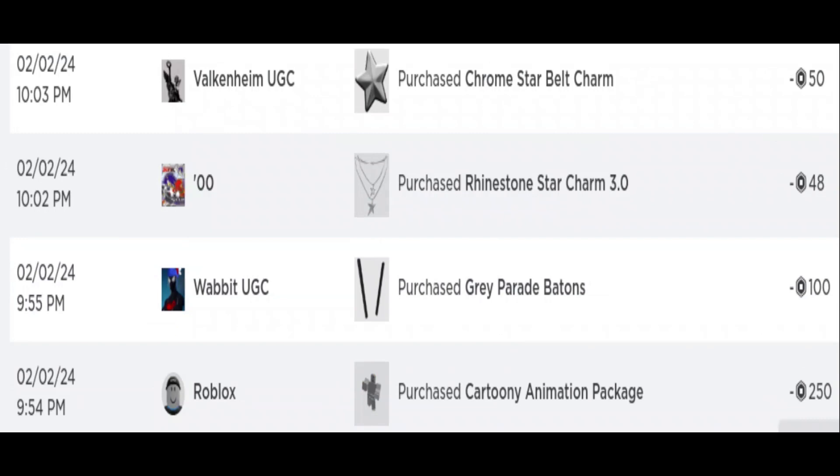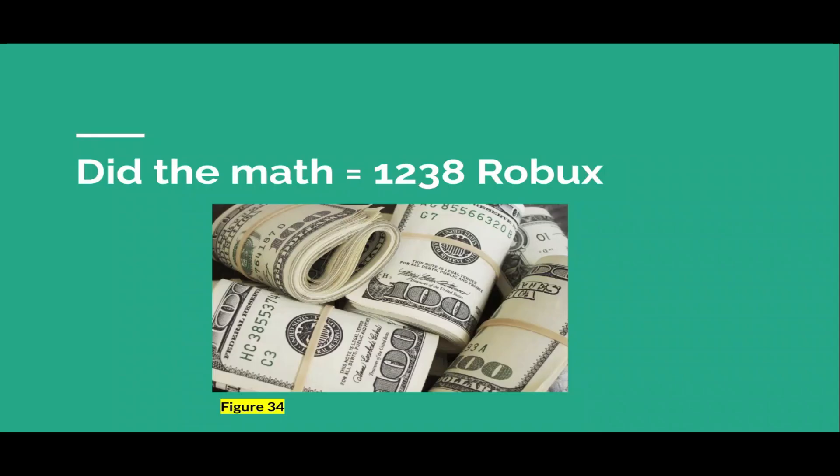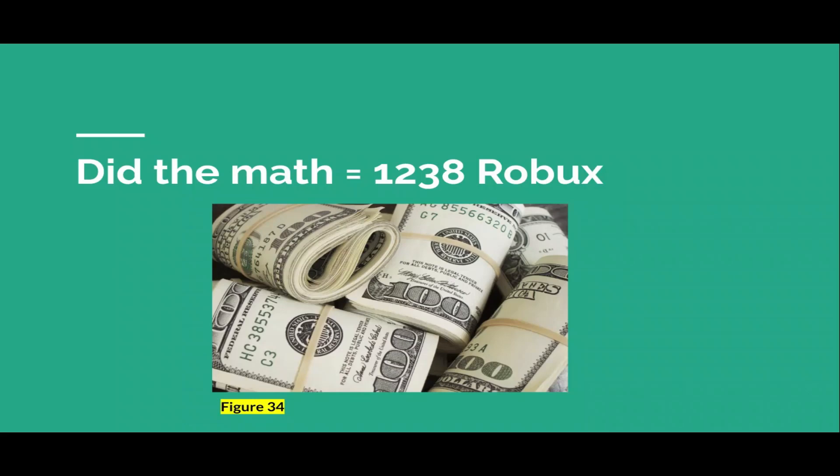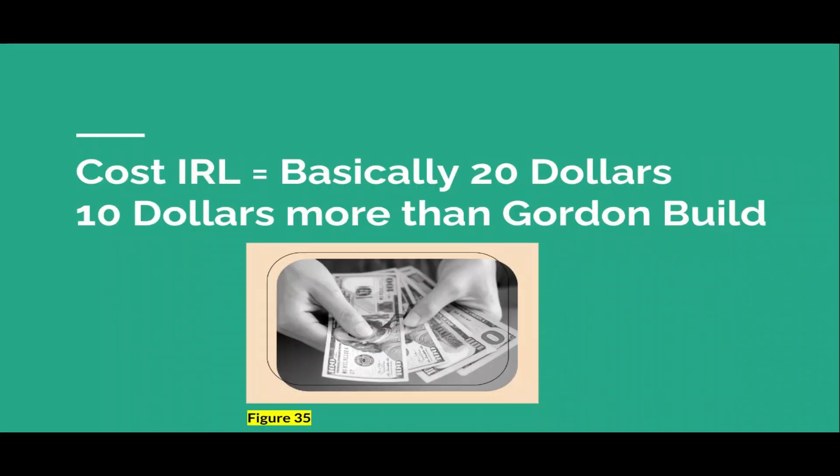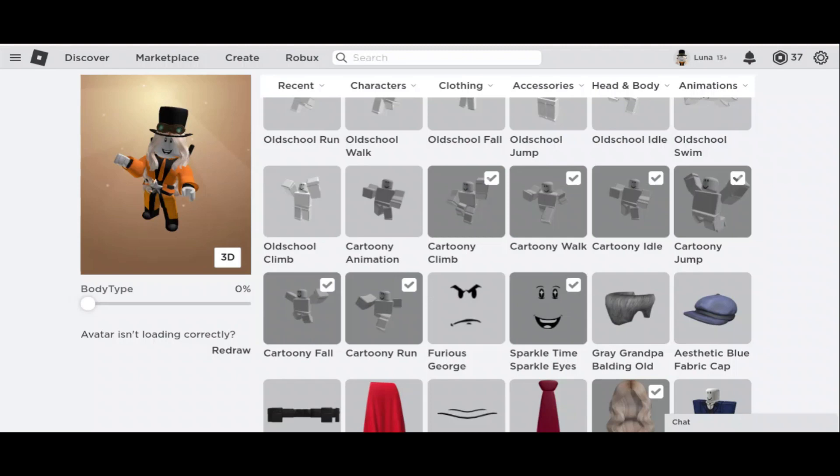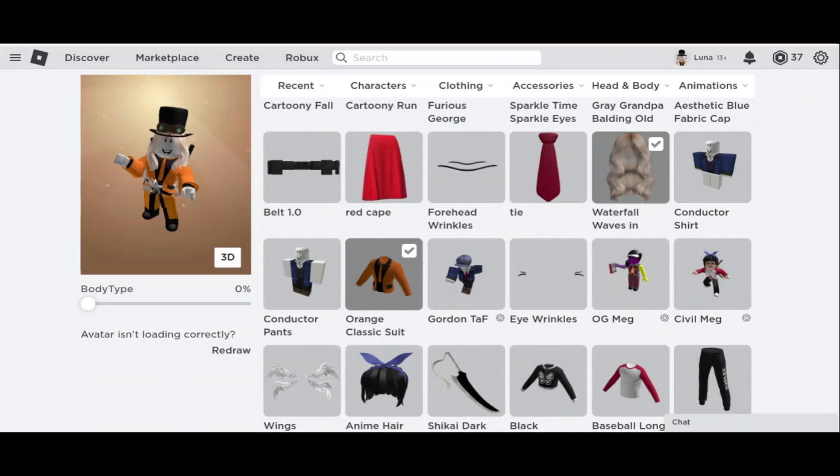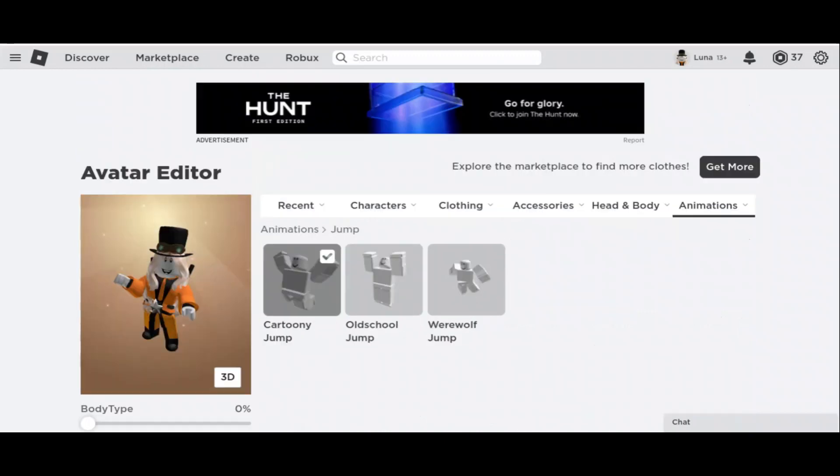The thing is, I was able to be more creative with it because I actually need the character a bit deeper. So I purchased a chrome star belt charm for 50 Robux. Purchased rhinestone star charm for 3.0 for 48 Robux. Purchased a great parade batons for 100 Robux. Purchased cartoony animation package for 250 Robux. And I did the math. It's 1,238 Robux, which is actually double what I made for Gordon. As you'll see later. As these are the Robux packages. Originally I only did 800 Robux for Gordon, making it substantially larger. It costs basically $20 IRL. $10 more than the Gordon build. These can be screenshots of everything. You can see on my page as proof. Just pause if you need to.